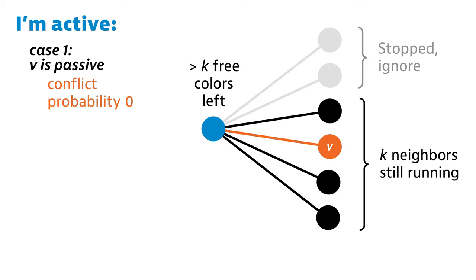With probability 1/2, v is passive and doesn't do anything. No conflicts. With probability 1/2, v is active and it picks some color. But I had more than k free colors to choose from. At most one of those can be the color picked by v.